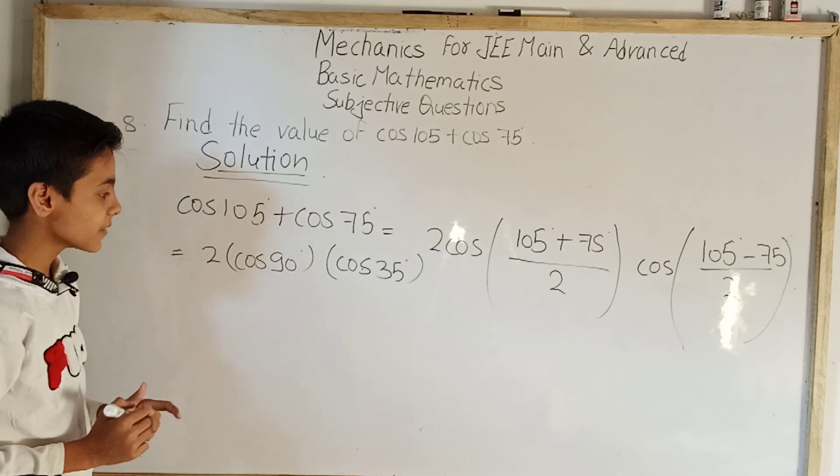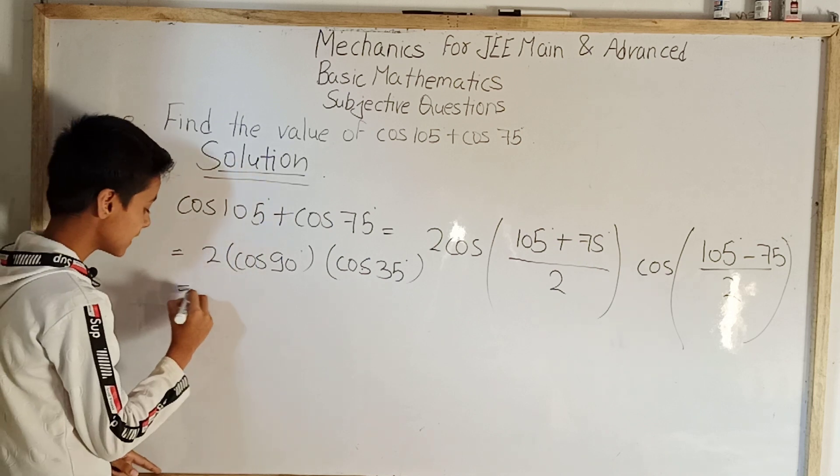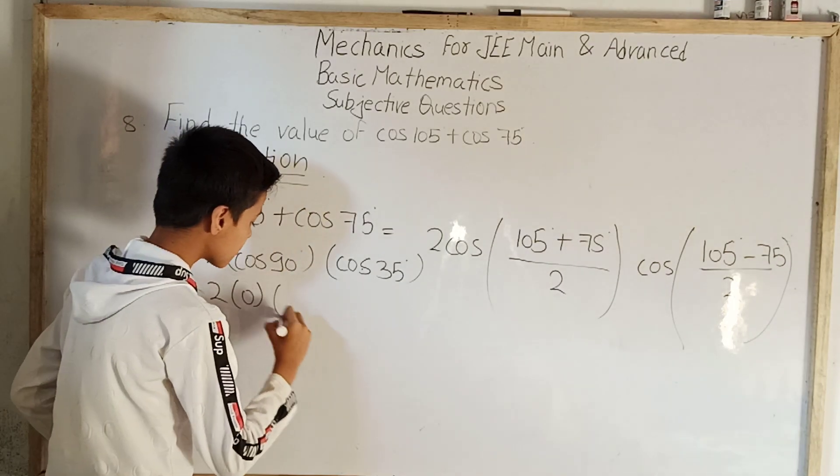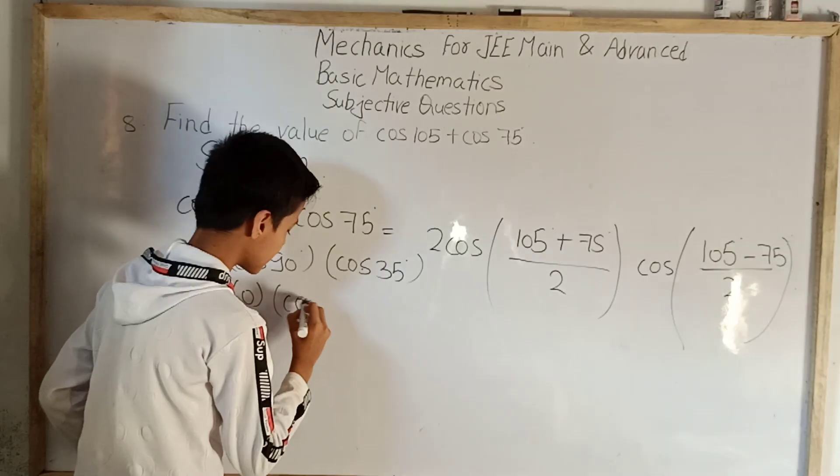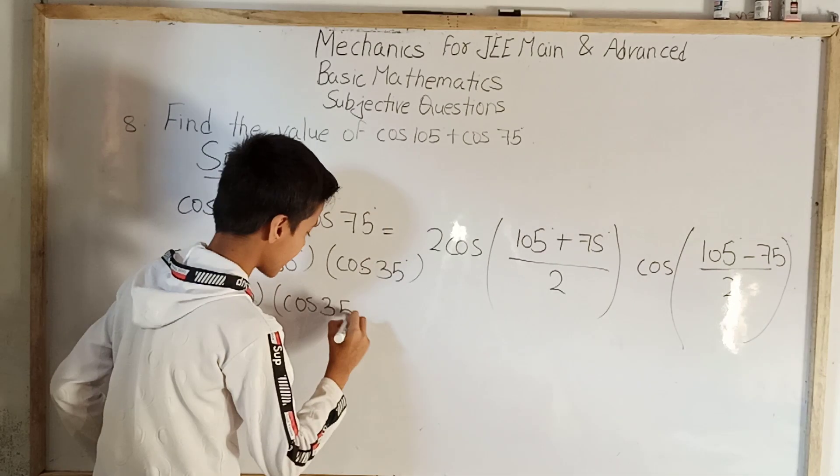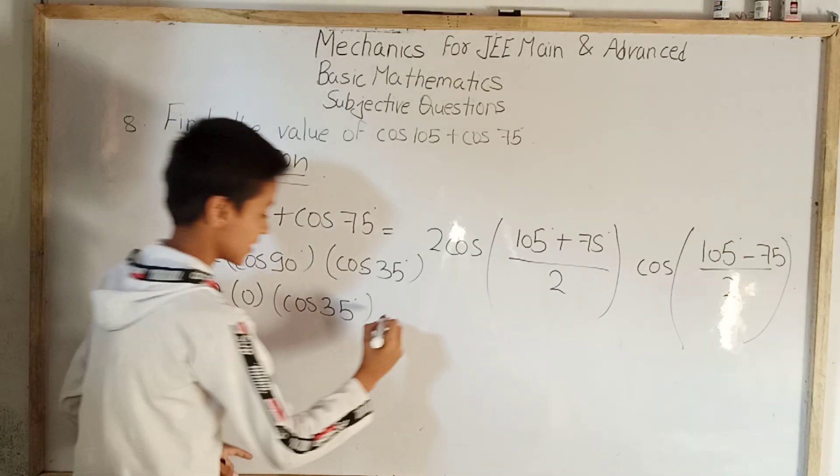Now we know cos 90 degree value is 0, so we can write it as 2 bracket 0. No need to evaluate this cos 35 degree. Now 2 into 0 is 0.